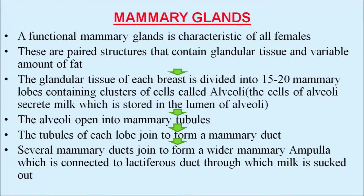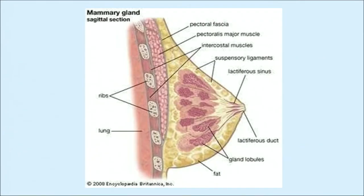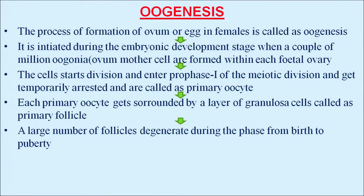A functional mammary gland is characteristic of all females. These are paired structures containing glandular tissue and a variable amount of fat. The glandular tissue of each breast is divided into 15 to 20 mammary lobes, which contain clusters of cells called alveoli — different from the alveoli in lungs. The cells of alveoli secrete milk stored in the lumen of alveoli. The alveoli open into mammary tubules; tubules of each lobe join to form a mammary duct; several mammary ducts join to form a wider mammary ampulla connected to the lactiferous duct, through which milk is sucked out.